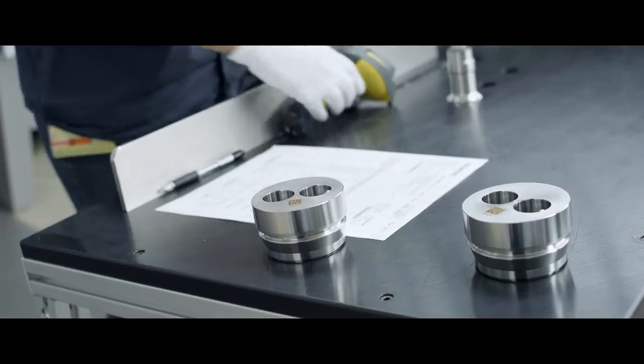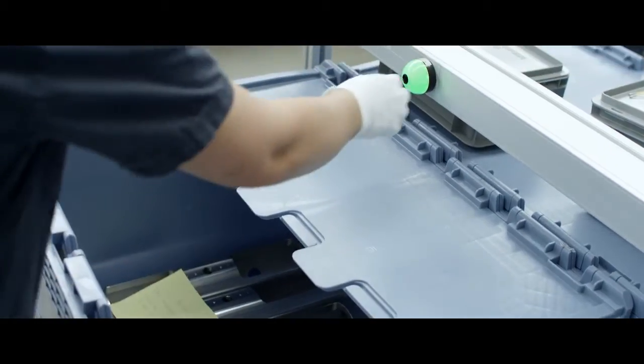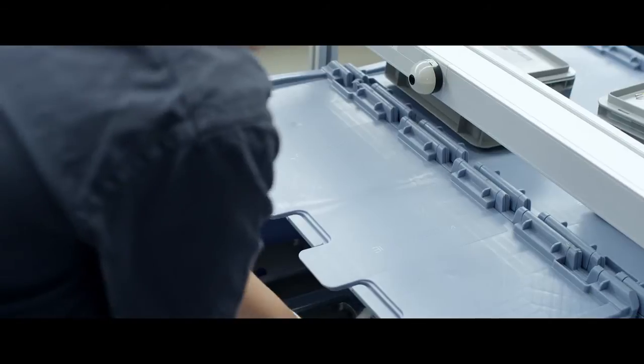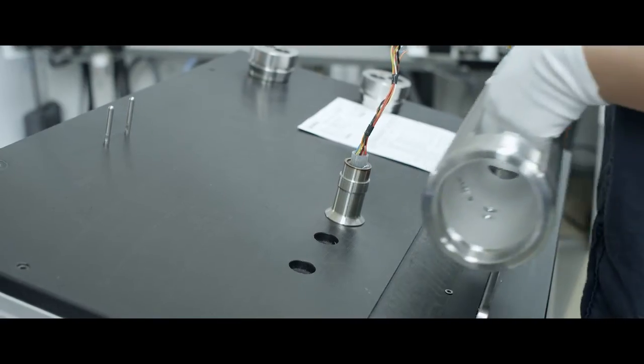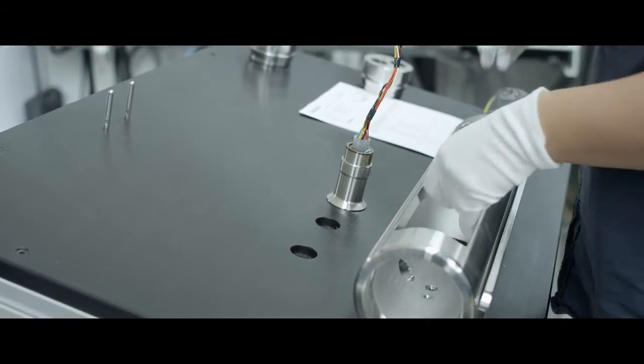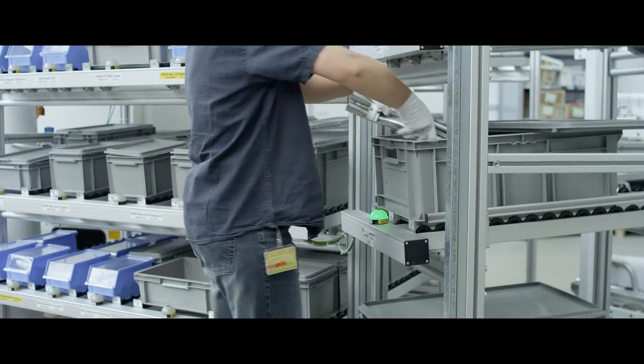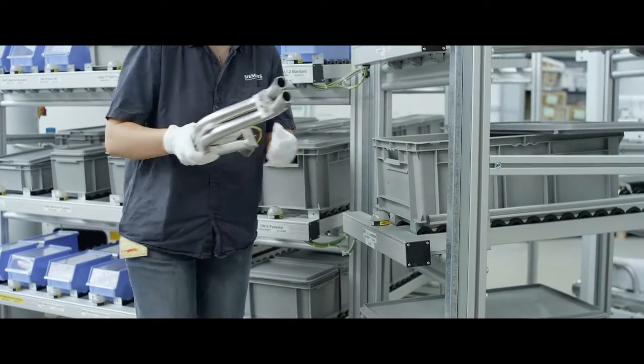Every step is documented. This means every component in a Siemens Coriolis flow meter is traceable. It means that every component is scanned prior to use and it is also scanned frequently when it is assembled to other parts. And that is basically the key to securing our high quality level.